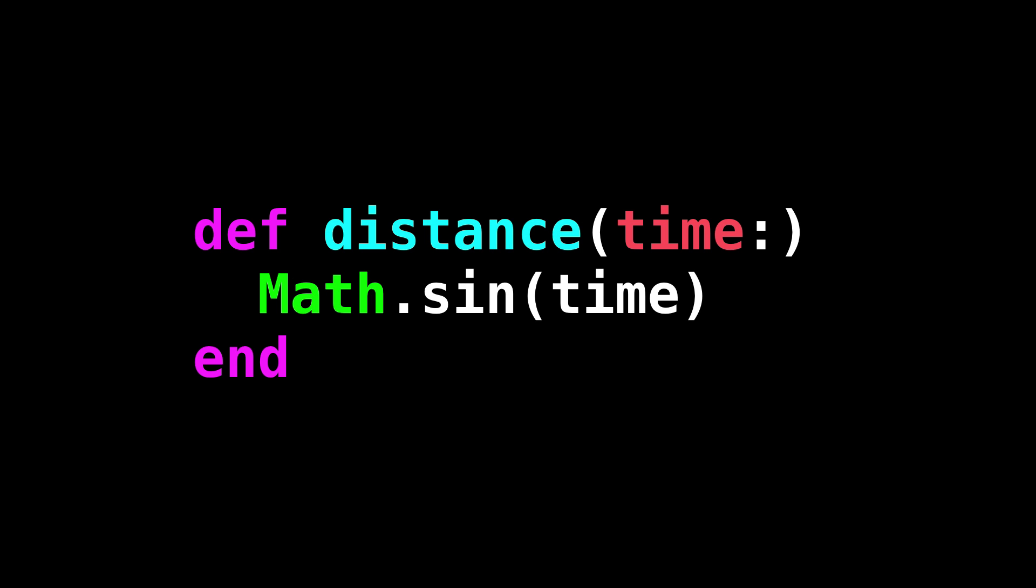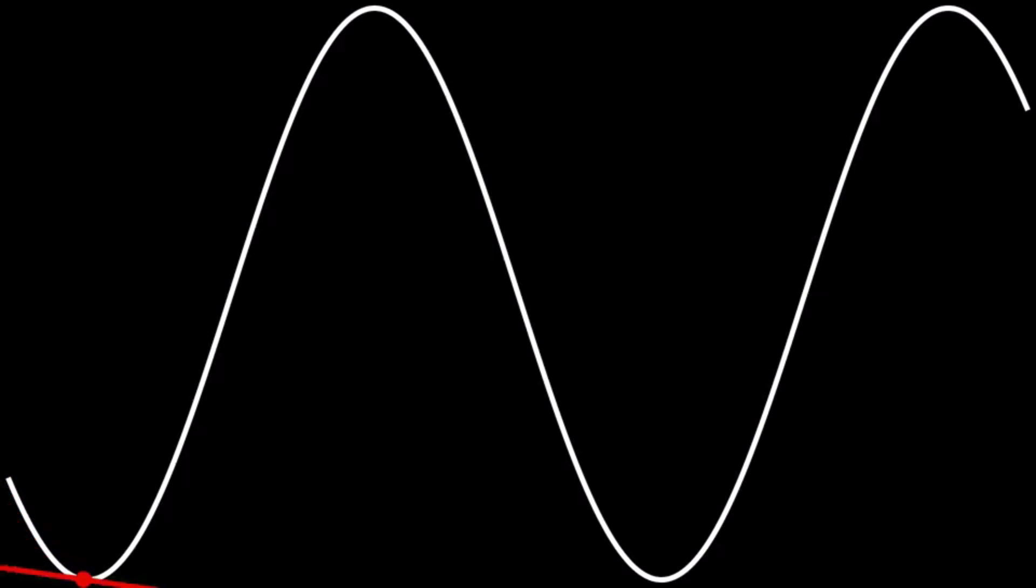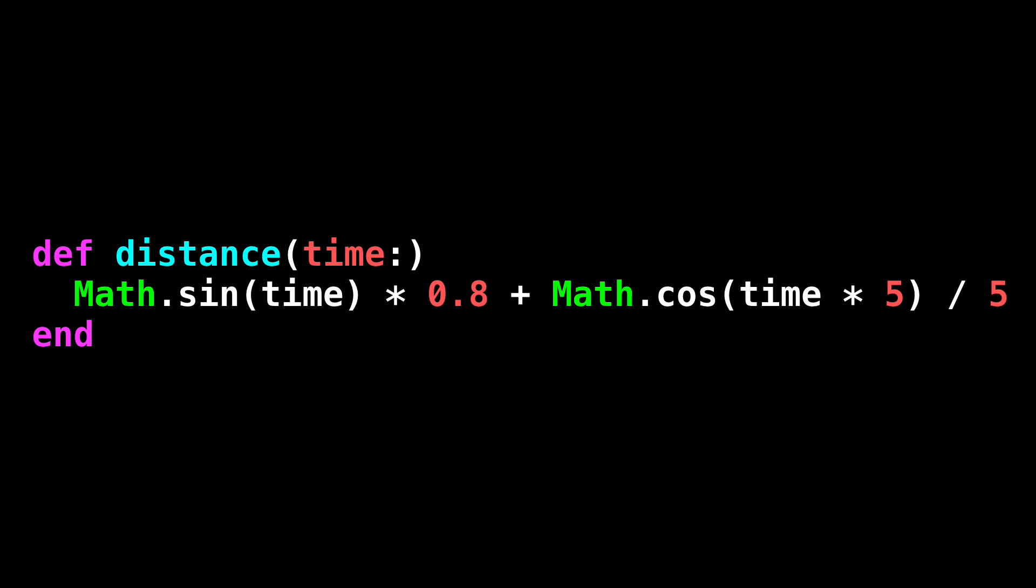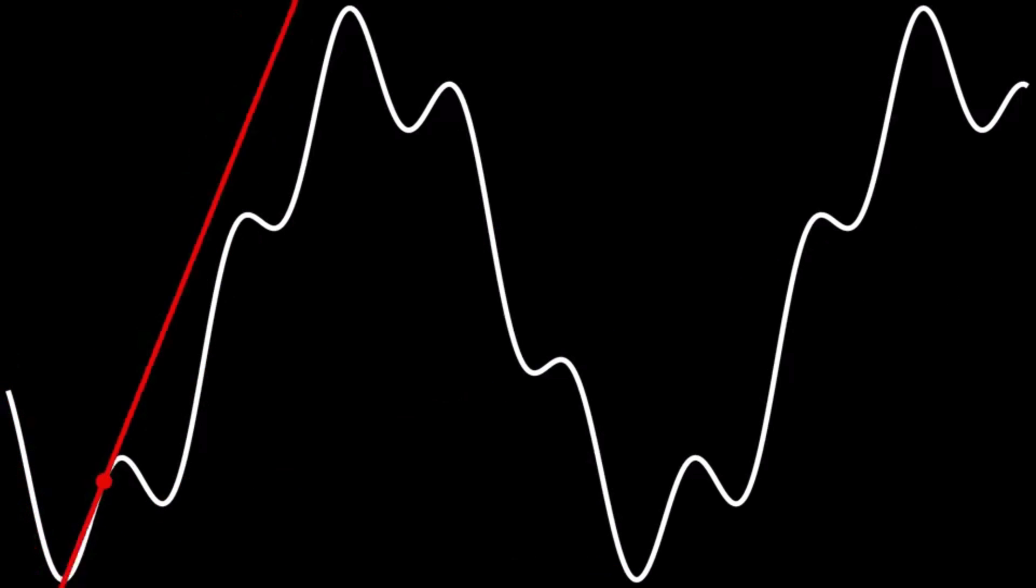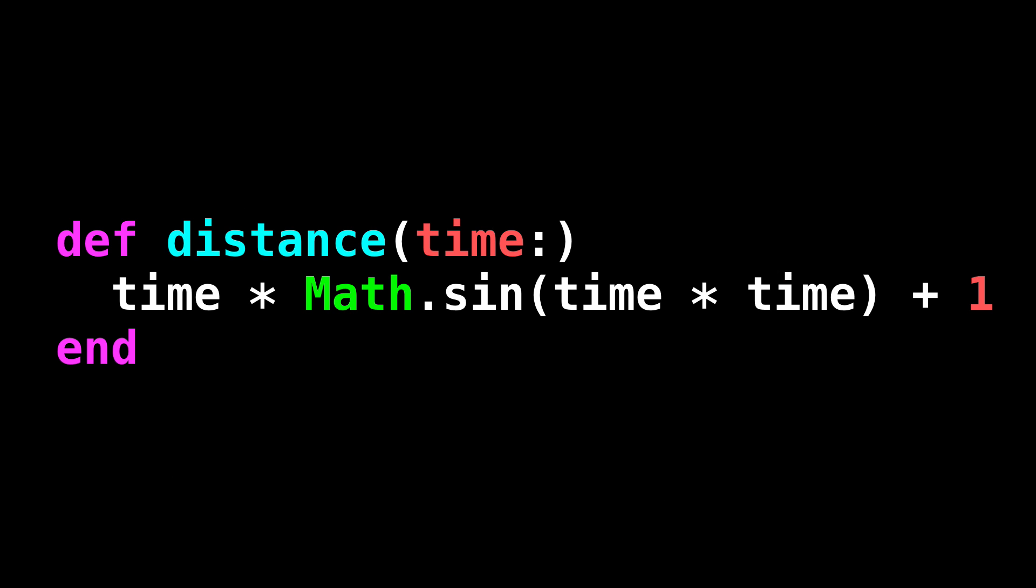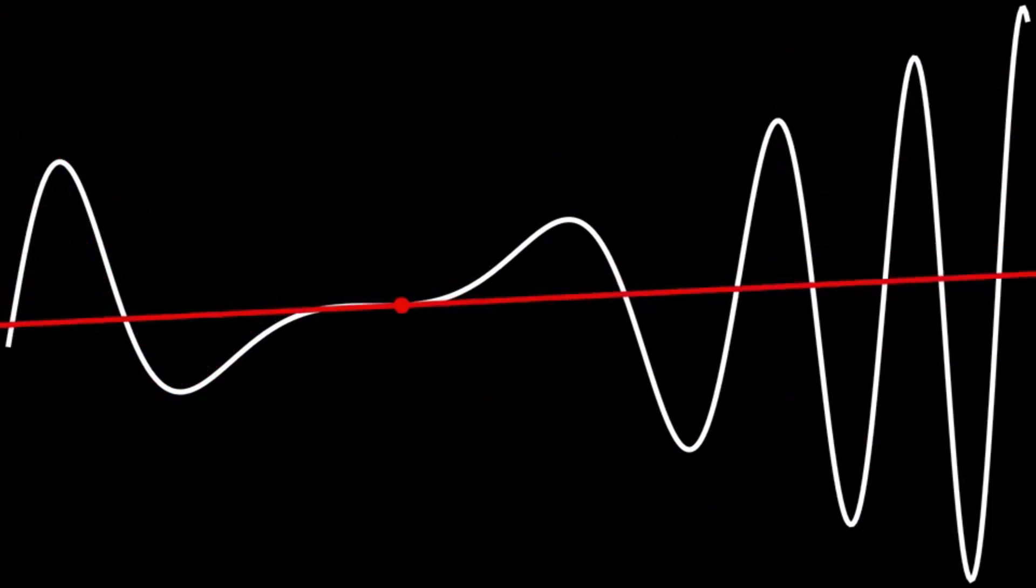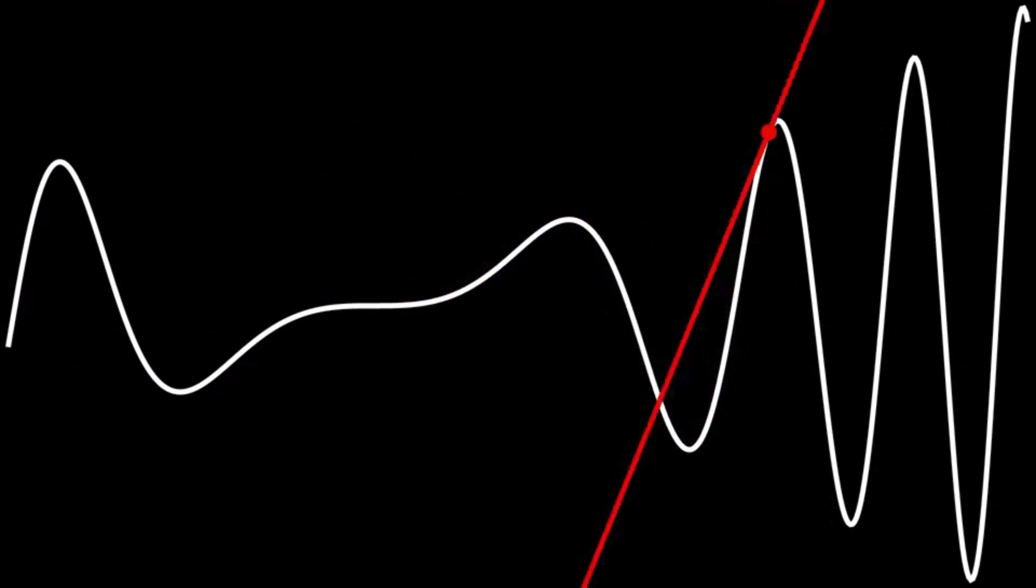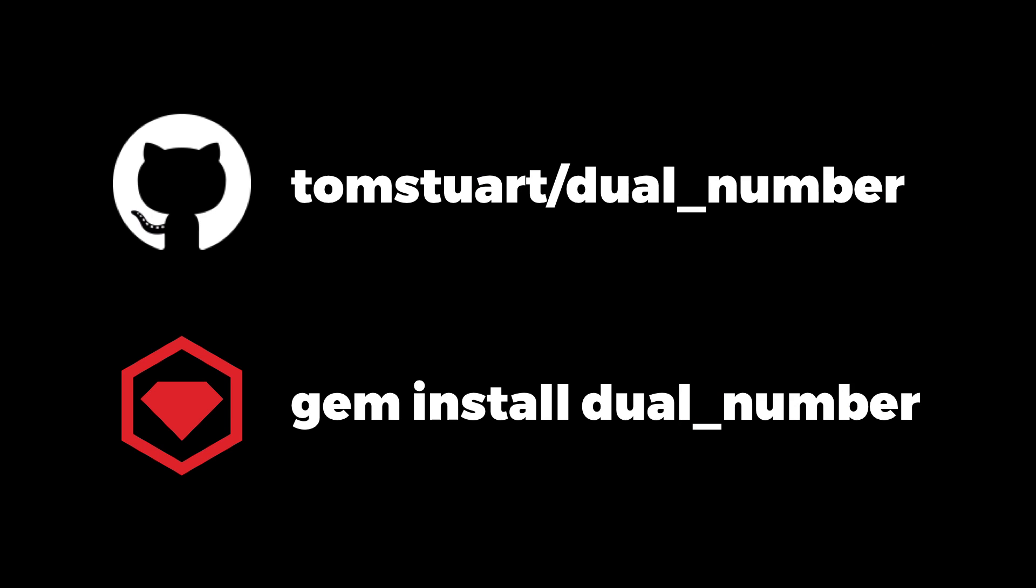So just to finish, if I define my distance function to be the sine of the time, then here's the graph of the real and dual values that my Ruby code produces. Hopefully you're convinced that the slope of the line is correct. And we can compose as many operations as we want. Here's a distance function that does sine and cosine and multiplies and adds and divides. And here are the values and rates of change produced by that code. Here's a final example. Time multiplied by the sine of time squared plus one looks like this.